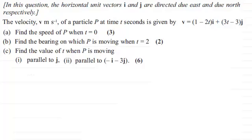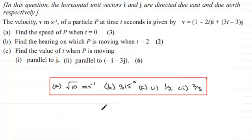Okay welcome back if you had a go. So the numerical solutions then for part A it's root 10 meters per second. B 315 degrees. C part 1 half and C part 2 two thirds. So I'll show you now how I went about solving these.